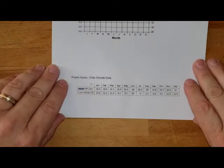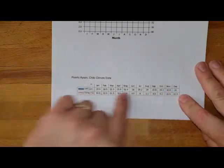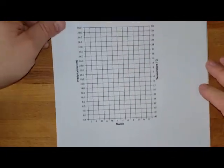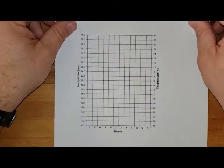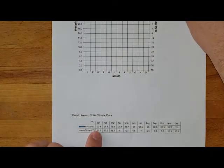I have down here along the very bottom the climatic information for one of my most favorite cities. It's Puerto Aysen in the south of Chile and so what we're going to want to do is plot out the temperature and the precipitation all along our little graph for each one of these months.